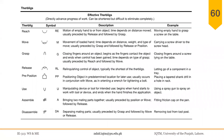Therbligs are the basic motions performed to carry out any physical activity by hand. We will discuss them in detail in a following lecture, but they include reach, move, grasp, release, preposition, use, assemble, and disassemble. These are the primary motions, and they have their symbols and alphabetic identifications.